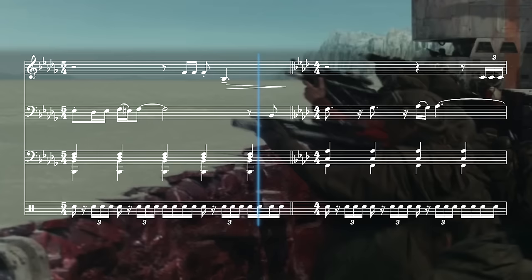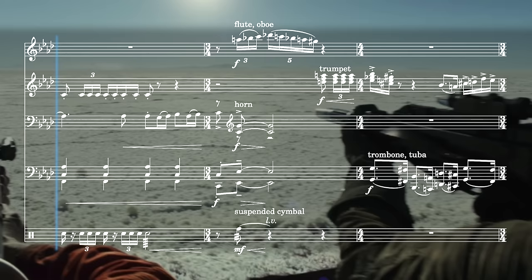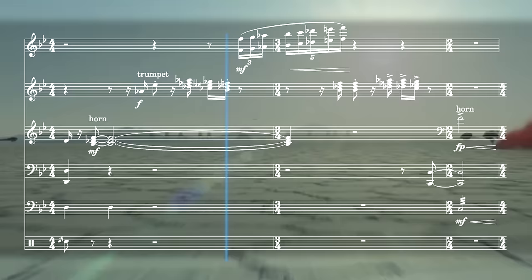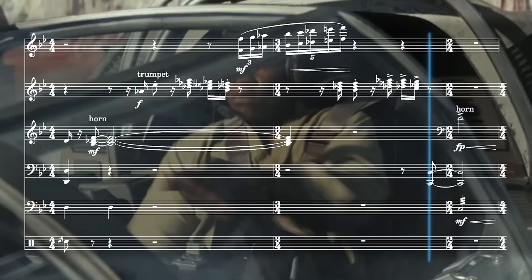Trombones are accompanied by a busy snare drum part alongside interjections from trumpets. The unsettled, incidental music that we hear next, replete with outbursts of minor triads from the trumpets, mirrors the clunky and clearly outdated equipment employed by the resistance.